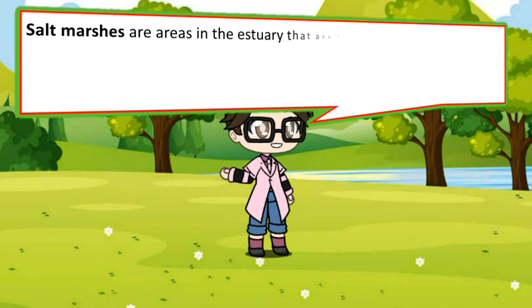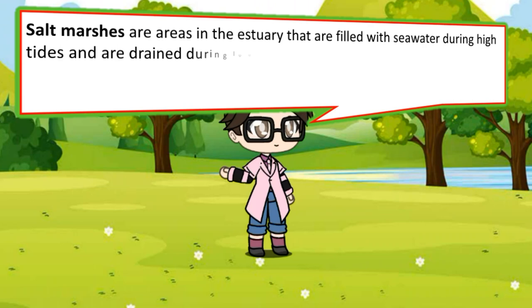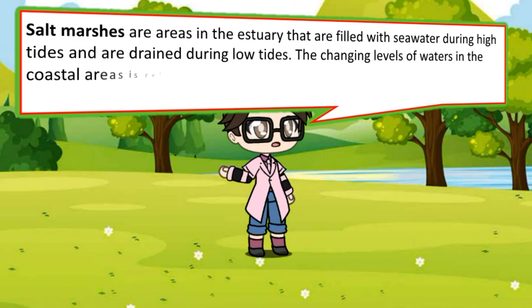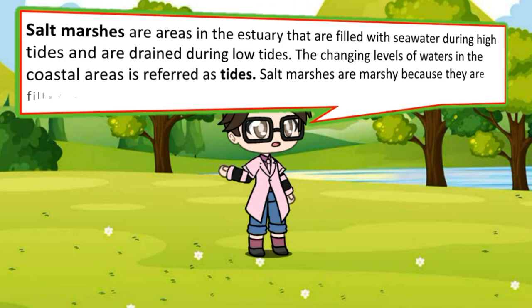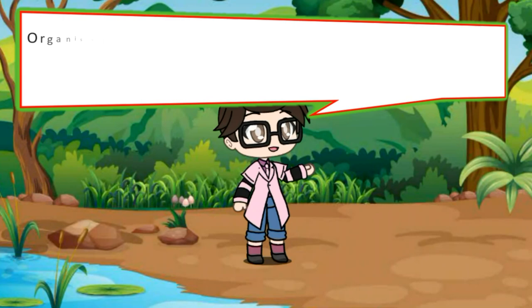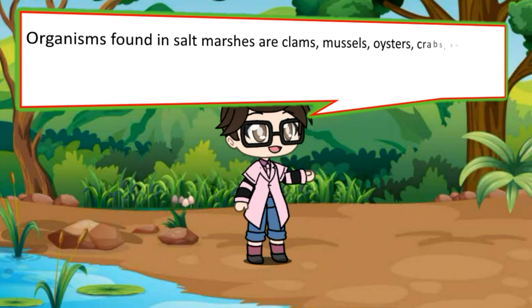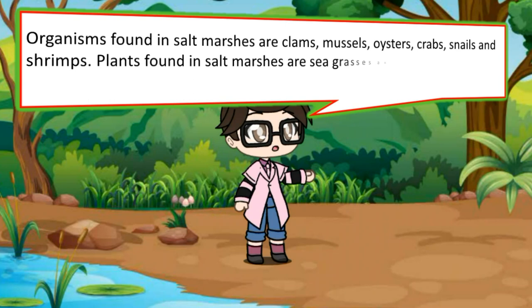Salt marshes are areas in the estuary that are filled with seawater during high tides and are drained during low tide. The changing levels of water in coastal areas is referred to as tides. Salt marshes are marshy because they are filled with decomposing plant matter. Organisms found in salt marshes are clams, mussels, oysters, crabs, snails, and shrimps. Plants found in salt marshes are seagrasses and other plants that are tolerant to salt water.